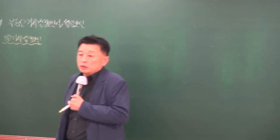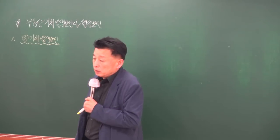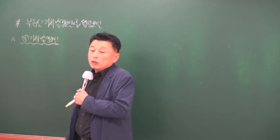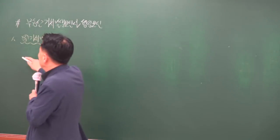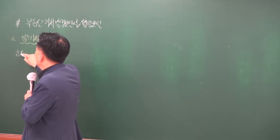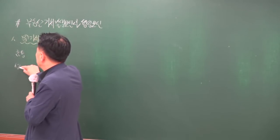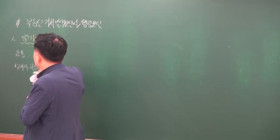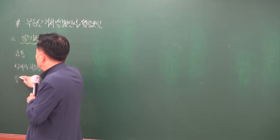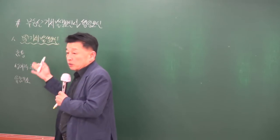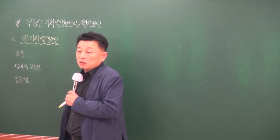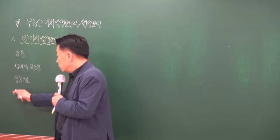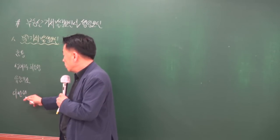가치 발생 요인이라는 것은 재화가 가치를 갖기 위해서 구비되어야 될 조건입니다. 그 조건은 효용이 있어야 하고, 상대적 희소성이 있어야 하며, 유효수요가 있어야 합니다. 원래 경제학자들이 제시한 세 가지였는데, 나중에 부동산학자가 이전성까지 추가했습니다.